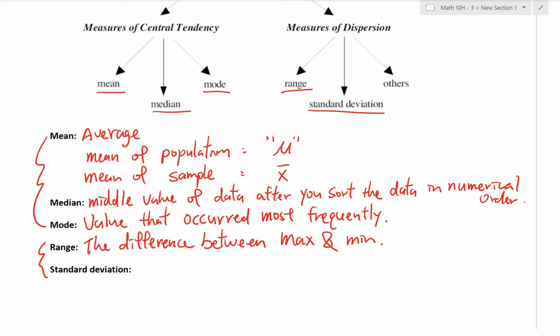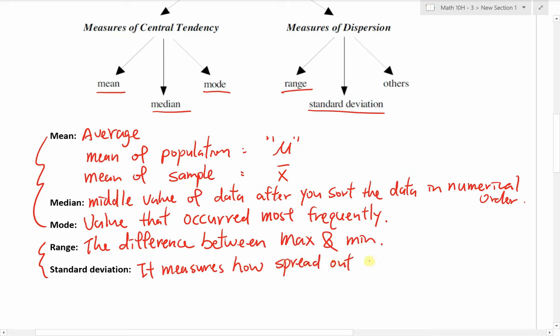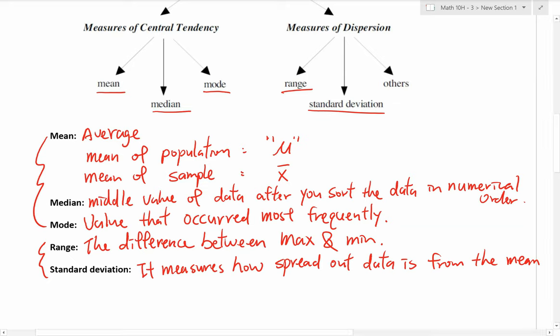The other measure we see quite often is the standard deviation. Standard deviation measures how spread out data is from the mean. Notice that range is just about the difference between maximum and minimum, whereas standard deviation looks at how spread the data is from the mean specifically. The bigger the standard deviation, the more spread out — meaning values are further away from the mean, giving you quite a range of different values.